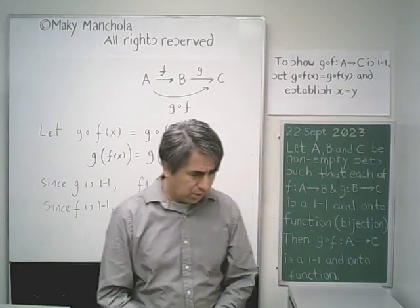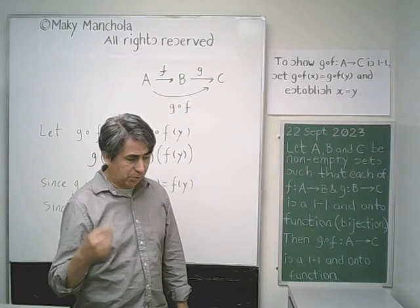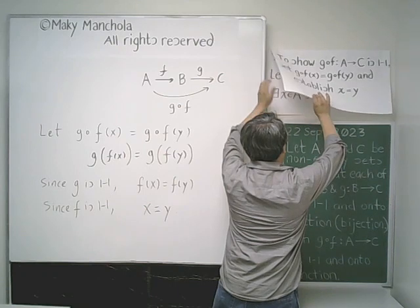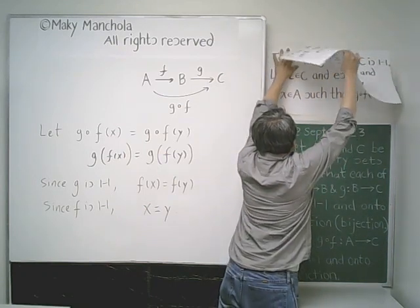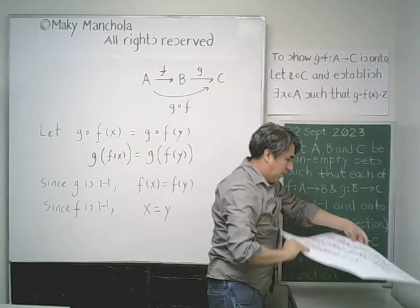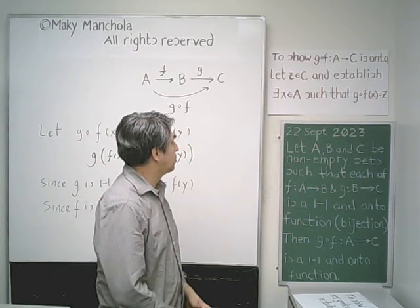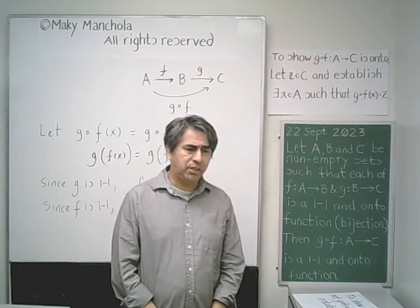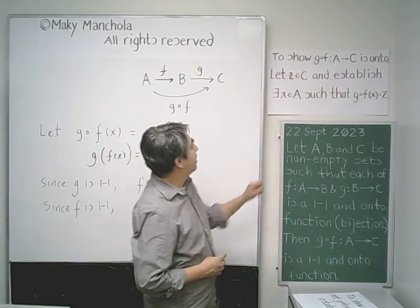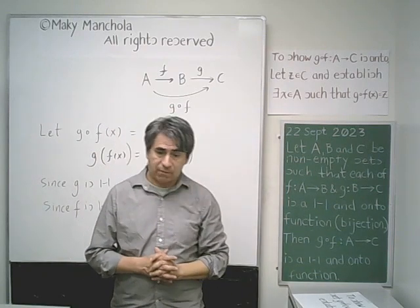Now let's work on showing that G composed with F is onto. To show that G composed with F is onto, let Z be an element of C and establish that there is an element X in A such that G composed with F of X equals Z.